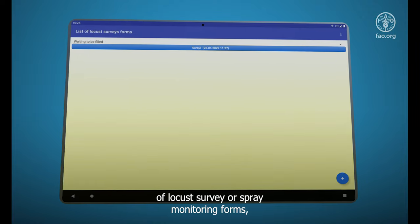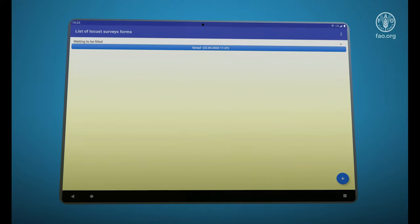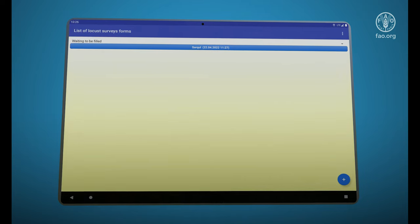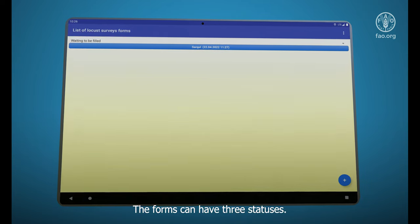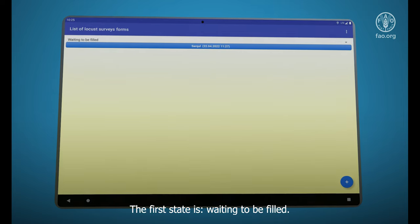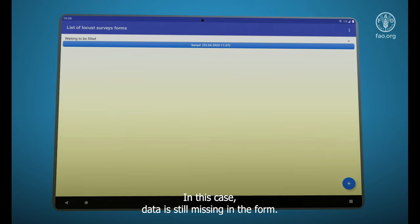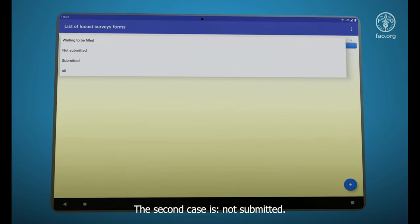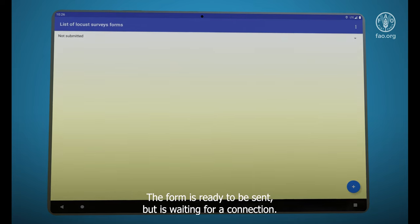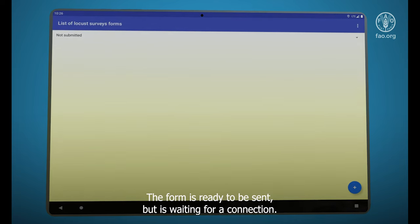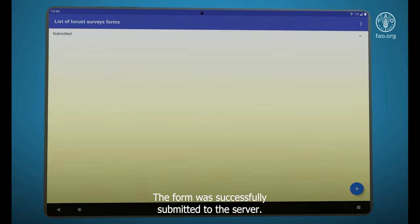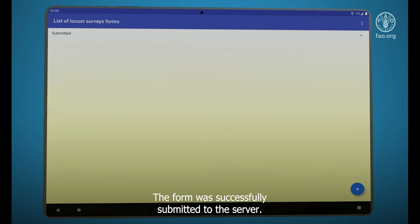In the list of LOCUS survey or spray monitoring forms, you will be able to see all the forms you have prepared. The forms can have three statuses. The first status is waiting to be filled. In this case, data is still missing in the form. The second case is not submitted. The form is ready to be sent but is waiting for a connection. The third one is submitted. The form was successfully submitted to the server.